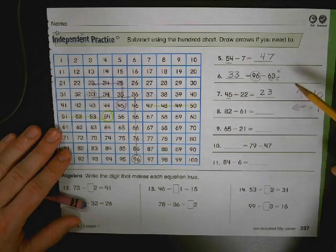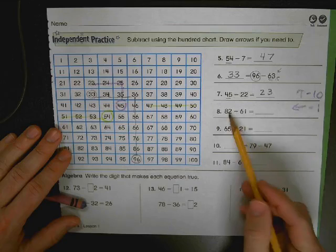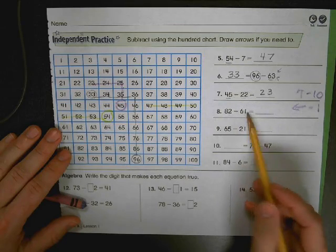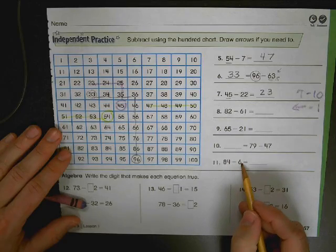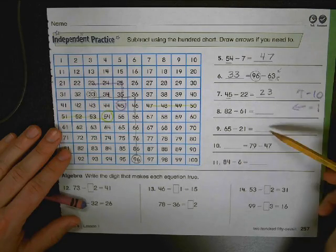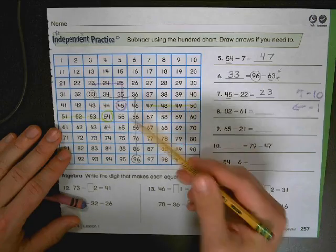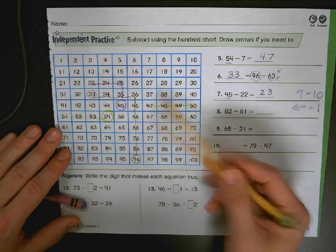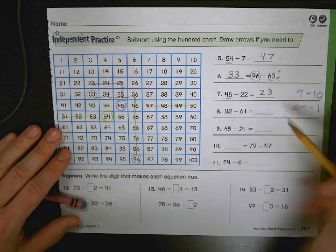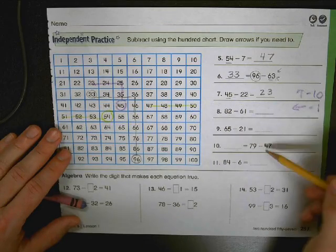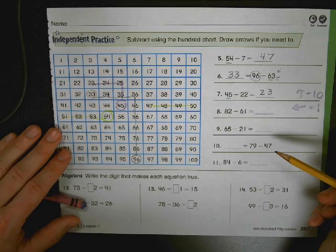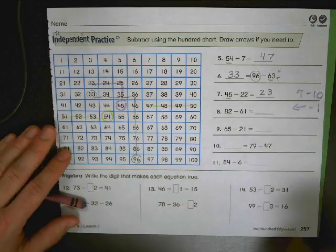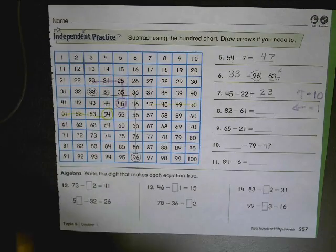Go ahead and pause the video here and take a look at 82 minus 61, 65 minus 21, 79 minus 47, 84 minus 6. Fill in the answer. Use your hundreds chart. You need to get different crayons. If you want to use your pencil, great. Again, you're going to have to do four more on your own. Knock those out.